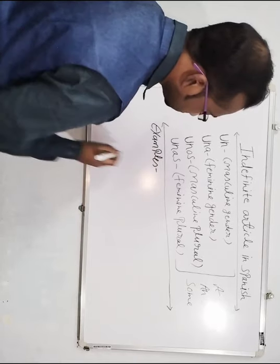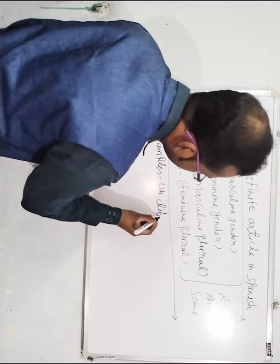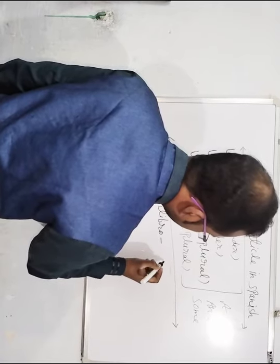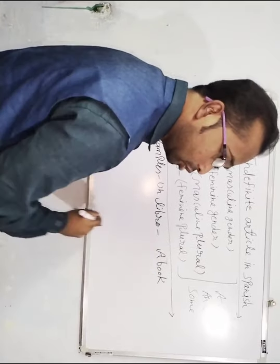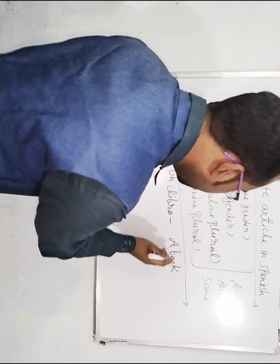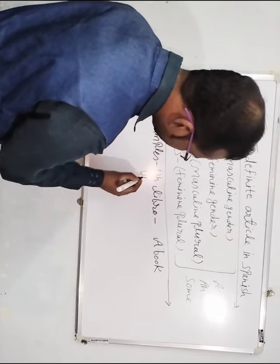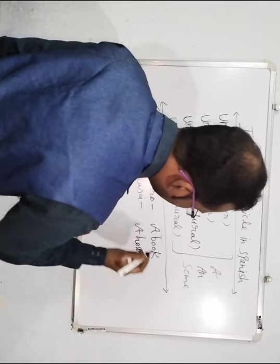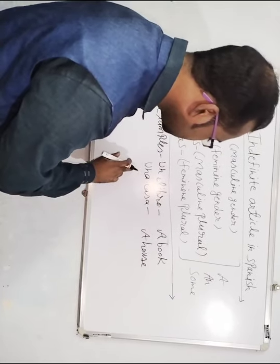Examples. Un libro. Un libro means in English 'a book'. So 'a book' means in Spanish language 'un libro'.